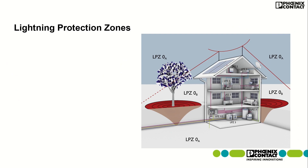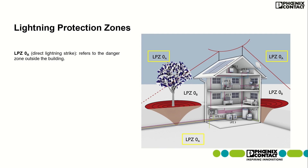The building has been differentiated into different lightning protection zones. Lightning protection zone 0A — the direct lightning strike zone — refers to the danger zone outside the building, beyond the lightning arrester, where lightning can strike directly.